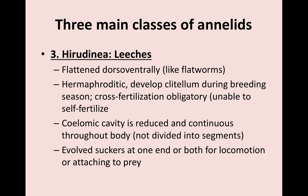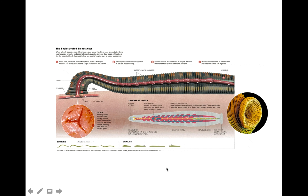The third class are the leeches — Hirudinea — flattened dorsal-ventrally like flatworms. Also hermaphroditic, they develop a clitellum during breeding. They have cross-fertilization and cannot self-fertilize. Leeches have suckers at one end for both locomotion and to attach to their prey, making them sophisticated blood suckers.